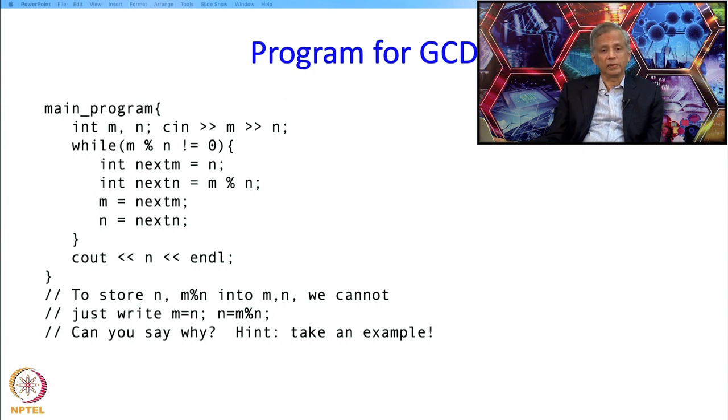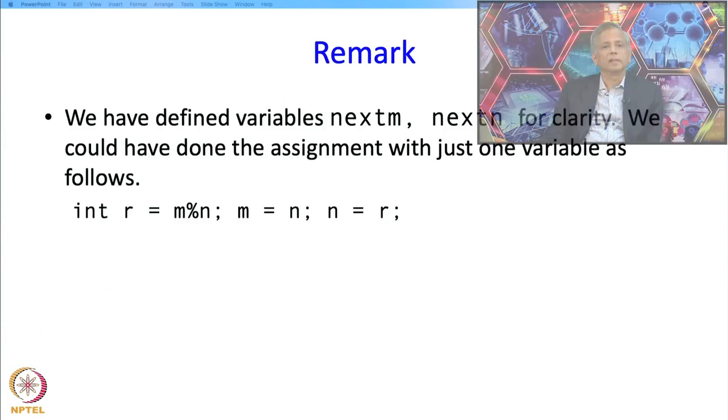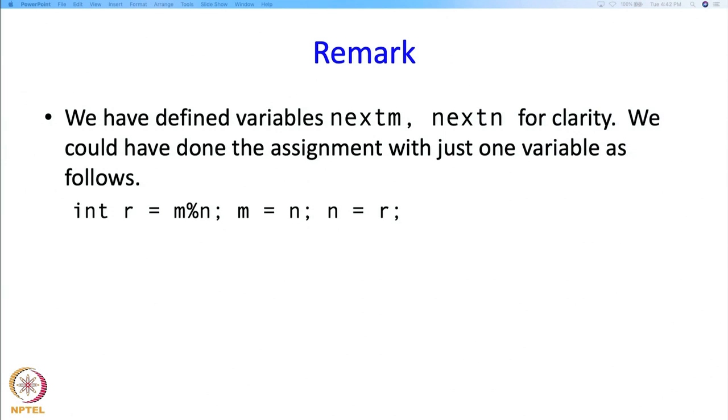So next m and next n have been defined for clarity, we could have just used one variable instead of both and that is what is shown over here. But you do not have to really worry about these details, you can just use two variables, who is counting?